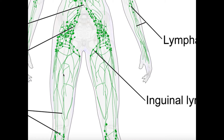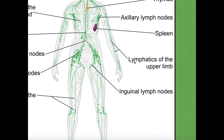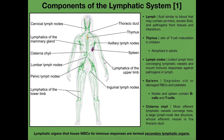These are our lymphatic vessels and they carry a substance called lymph. Lymph is a milky fluid similar to blood, but it contains a lot of proteins, excess fluid that has been filtered into the interstitial area, and pathogens from tissues and the interstitium.